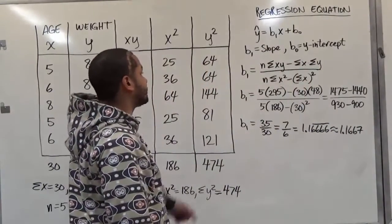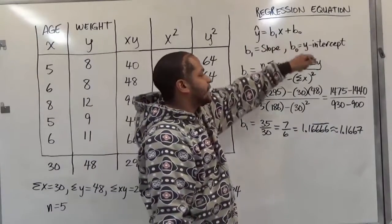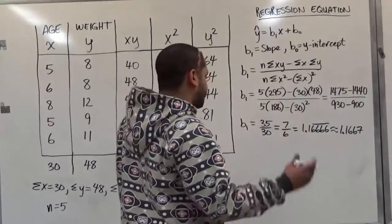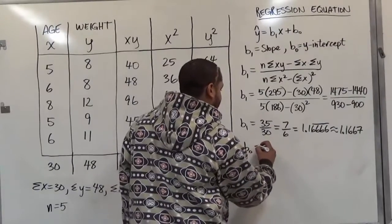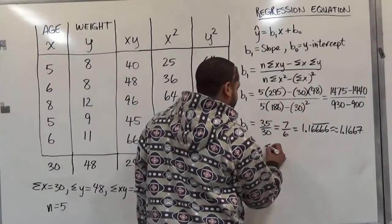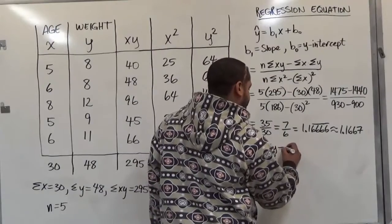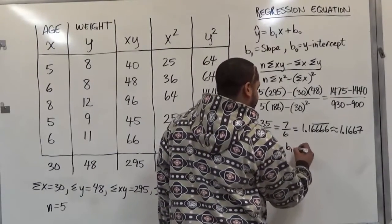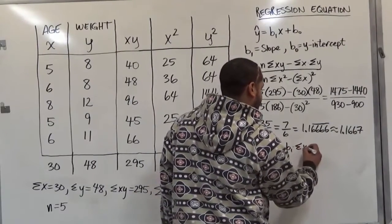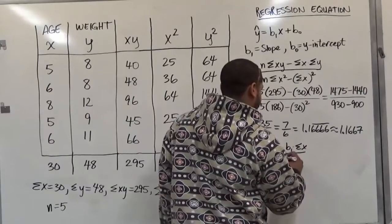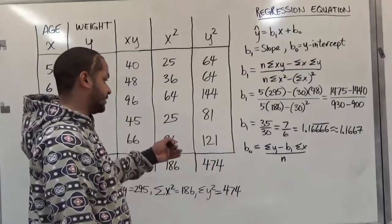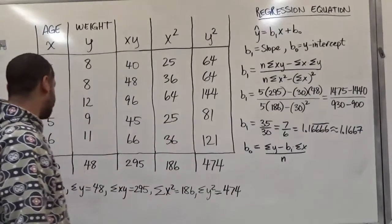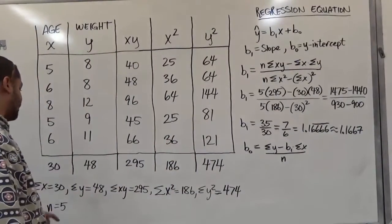Now, the only thing missing so we can complete this equation is our value of b0. There's a really short formula to do this for the y-intercept. So the b0 value is just the sum of y minus the b1 value times the sum of x, all divided by n.